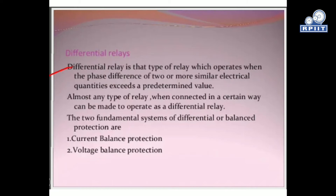If the value of the difference of this electrical quantity crosses that predetermined value for that particular device, then we will operate this differential relay. Almost any type of relay, when connected in a certain way, can be made to operate as a differential relay. Fundamentally, we describe this differential relay in two schemes — basically a balance protection kind of scheme, like current balance protection and voltage balance protection. We will discuss both schemes one by one, starting with current balance protection, for which we utilize the current differential relay.